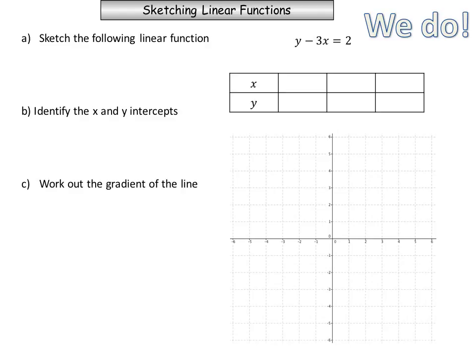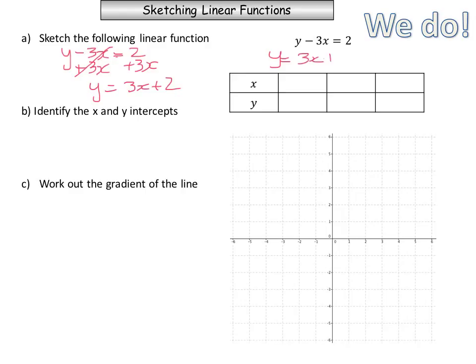Hopefully the first thing you did was look at the equation and see if it's solved for y — in this case it's not, so we need to do so. We have y minus 3x equals 2, so the next step is to add 3x to both sides. Remember that 3x minus 3x is 0, so we get y equals 3x plus 2. So our function is y equals 3x plus 2.